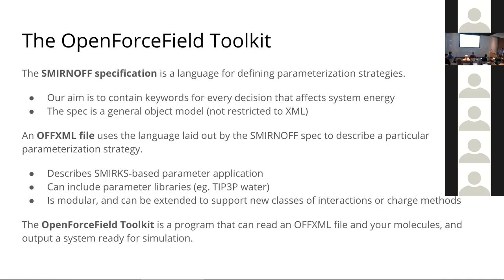A single instance of an OFF XML file uses the SMIRNOFF spec language to describe a particular parameterization strategy — specific SMIRKS mapping to bond lengths, force constants, and such. This can also include parameter libraries, like TIP3P water, where we recognize a molecule and stamp parameters on it. It's modular: right now we're mostly using it for SMIRNOFF99Frosst, but as we introduce new things like off-site charges, we have keywords to specify where those should be placed and what parameters they should have.